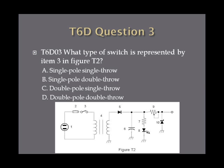Question 3. What type of switch is represented by item 3 in Figure T2? A. A single pole, single throw, B. Single pole, double throw, C. Double pole, single throw, or D. Double pole, double throw?